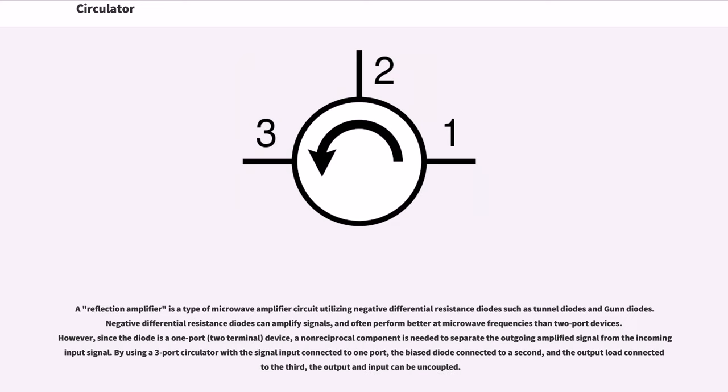A reflection amplifier is a type of microwave amplifier circuit utilizing negative differential resistance diodes such as tunnel diodes and Gunn diodes. Negative differential resistance diodes can amplify signals, and often perform better at microwave frequencies than two-port devices. However, since the diode is a one-port device, a non-reciprocal component is needed to separate the outgoing amplified signal from the incoming input signal.